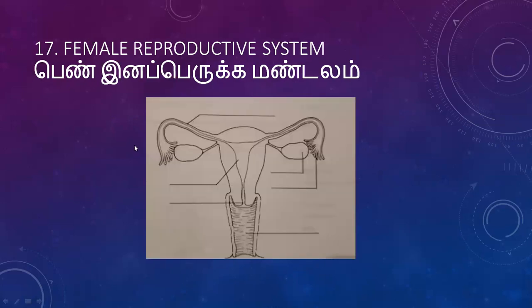Structure of the female reproductive system: a pair of ovaries, a pair of fallopian tubes, fallopian tube, uterus, cervix, and vagina — drawn and labelled.